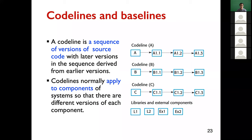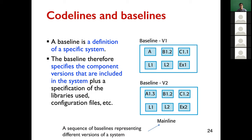Code lines normally apply to components of the system, not the entire system. A baseline is a definition of a specific system — it describes the component versions included in the system, plus the specification of libraries used, configuration files, and so on. We see two baselines on the right: for baseline v1, each component has a specific version; for baseline v2, each component has another set of versions. Essentially, a baseline represents one version of the whole system.